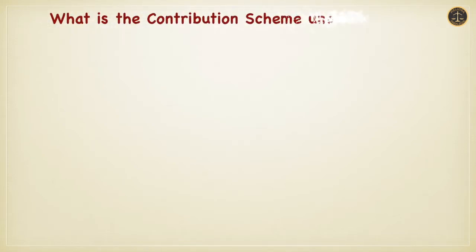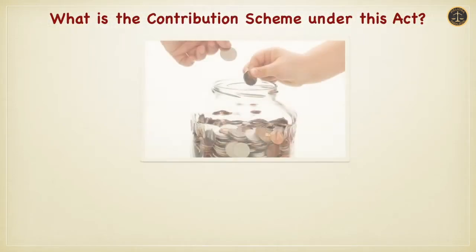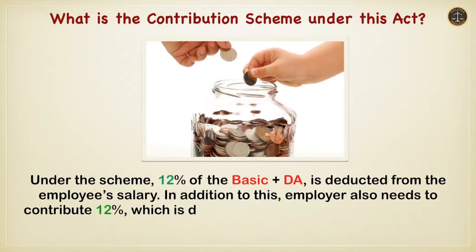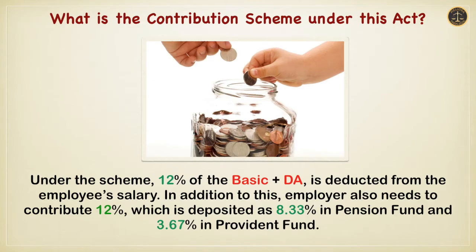What is the contribution scheme under this act? Under the scheme, 12% of the Basic plus DA is deducted from the employee's salary. In addition to this, the employer also needs to contribute 12%, which is deposited as 8.33% in the Pension Fund and 3.67% in the Provident Fund.